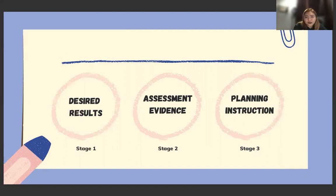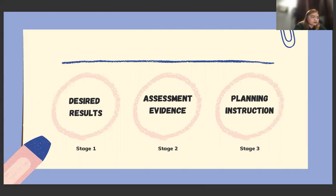For Stage 2, Assessment Evidence, we begin to think about how we will collect evidence of learning. This stage involves thinking about how we will provide evidence of students' learning and proficiency before deciding how we will teach the knowledge and skills. The guiding questions are: how will I know if learners have achieved the desired results, and what is acceptable evidence of student achievement?